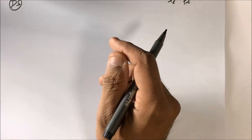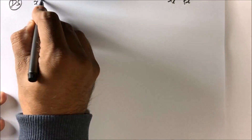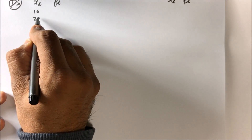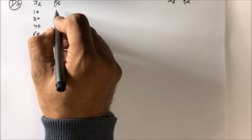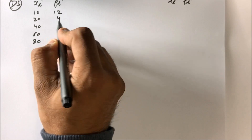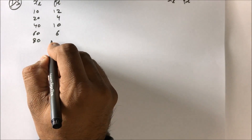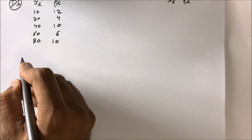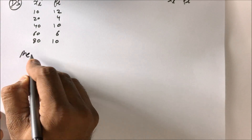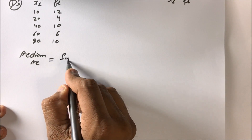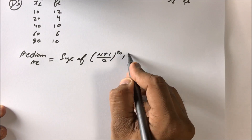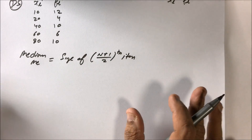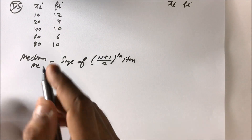Now for discrete series — you have Xi and Fi columns. For example, Xi is 10, 20, 40, 60, and Fi is 12, 4, 10, 6, 10. The formula for finding the median in discrete series is the size of the (n+1)/2 th item, where n = ΣFi. Whether n is even or odd does not matter here.